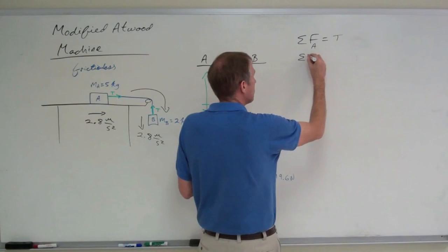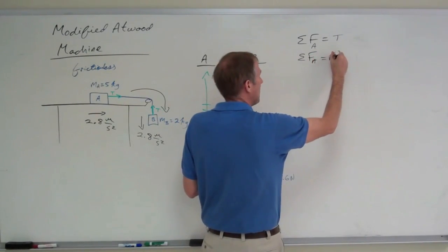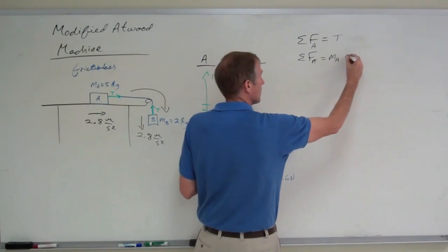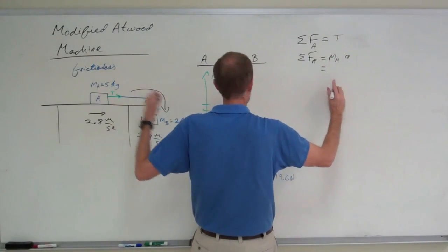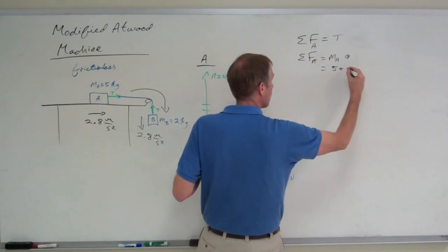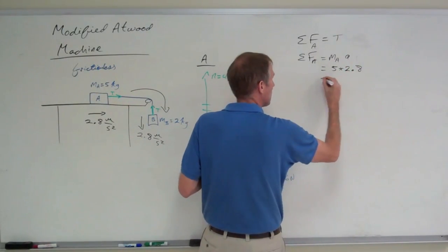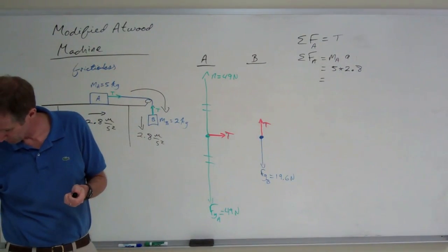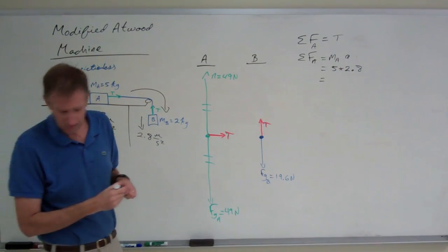Well, the net force on block A is the mass of block A, not the system. I'm just looking at block A, times its acceleration. Block A has a mass of five kilograms, times an acceleration of 2.8 meters per second squared. Five times 2.8 is 14 newtons.